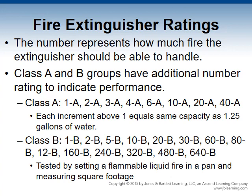Class B extinguishers are tested by setting a flammable liquid fire in a pan; the rating is determined based on the pan size and is proportionate to its square footage. A 120B extinguisher means it should be able to extinguish a 120 square foot pan fire. As the fire becomes larger, a greater amount of agent is needed and the relationship is not as proportional. Ratings include 1B through 640B. Class 1B through 20B are based on indoor fire tests, and Class 30B and above on outdoor fire tests.